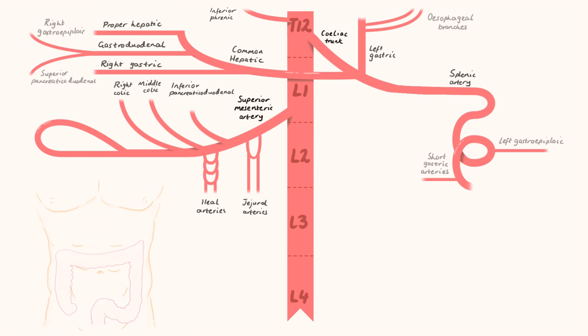The superior mesenteric artery is a loop. And the loop is completed by the arteries supplying the stuff in the lower right corner of the abdomen. This is the ileocolic artery.